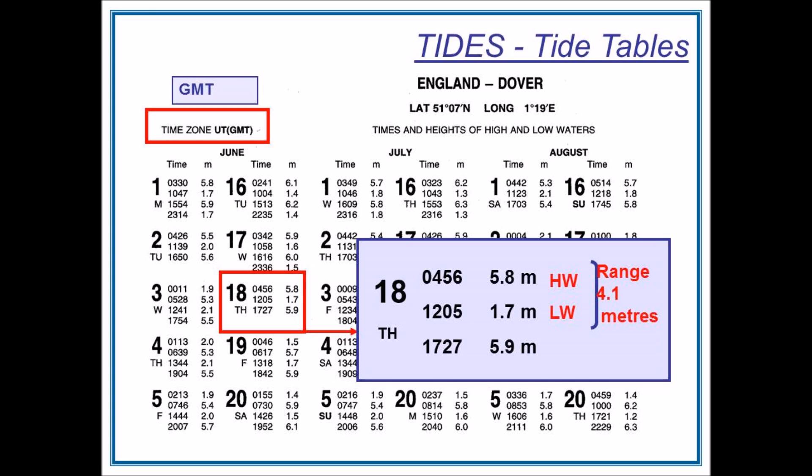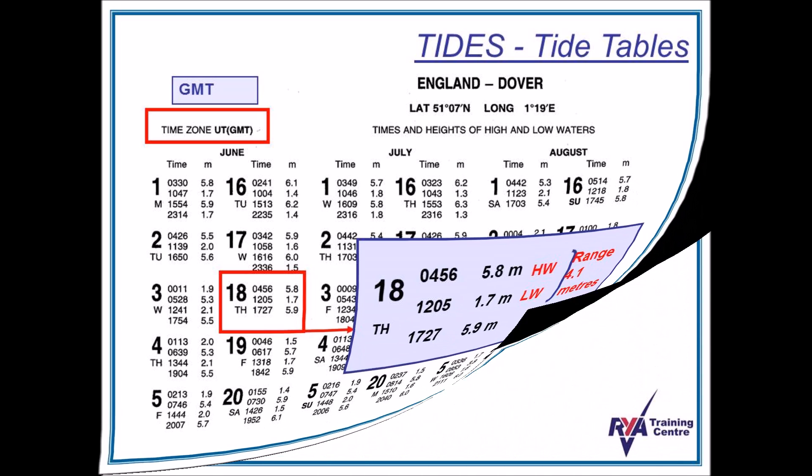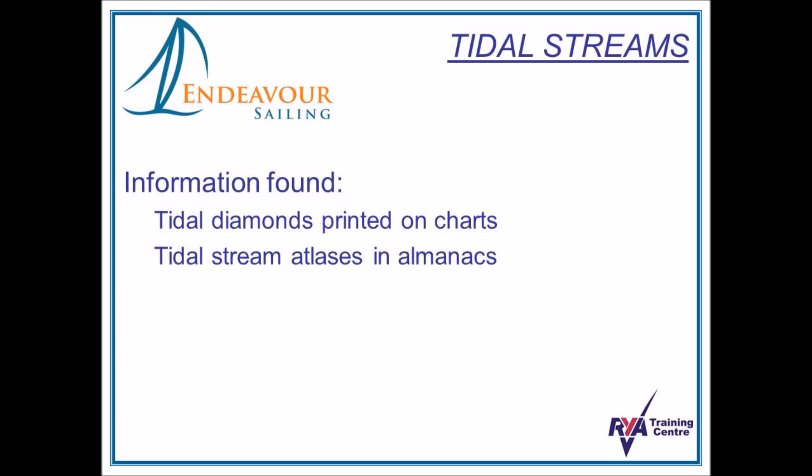Here we can see the difference between high water and low water gives us a range of 4.1 metres. When we come to work out tidal streams, we also need to find another bit of information, which we can find either on the tidal diamonds printed on the charts, or within a tidal stream atlas in the almanac.